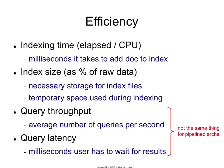For example: suppose I have a system that takes 10 seconds per query but can process a million queries in parallel. The throughput of that system would be 100,000 queries per second. I could have another system that takes one second to respond to a query, but can only do 1,000 queries per second. So the throughput for the first system would be a lot higher, but the latency would be a lot lower for the second system.